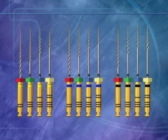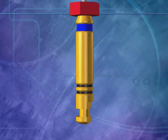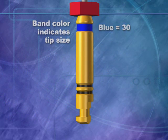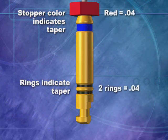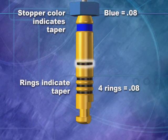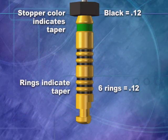The file identification system incorporates color rings in the handles of the files to show the tip size. The standard ISO color sequence is used in the main ring on the handle, the one closest to the cutting portion of the instrument. Another set of smaller rings grouped together further up the handle easily indicates each instrument's taper. Each ring equals a taper factor of two. Therefore, two rings are a .04, three rings are a .06, four rings indicate a .08 instrument, five rings are a .10, and six rings denote the .12 tapered instruments.